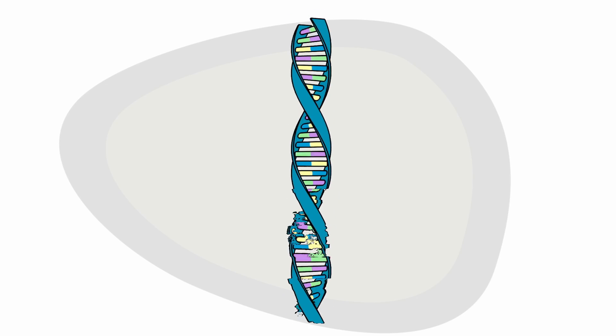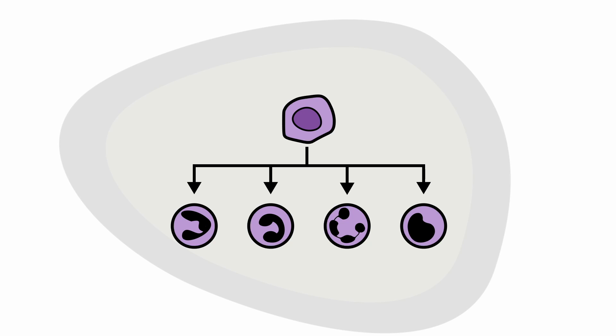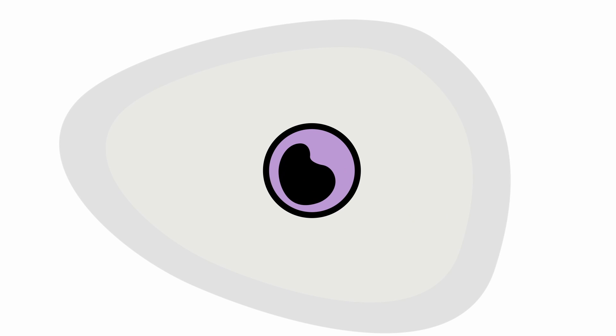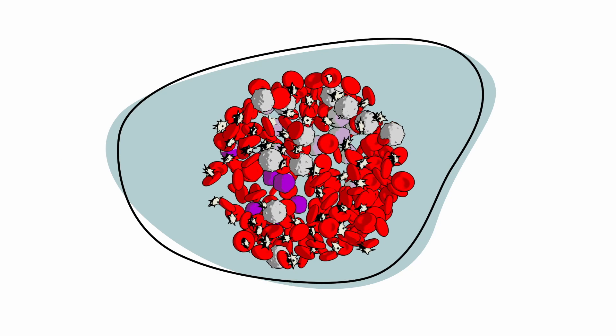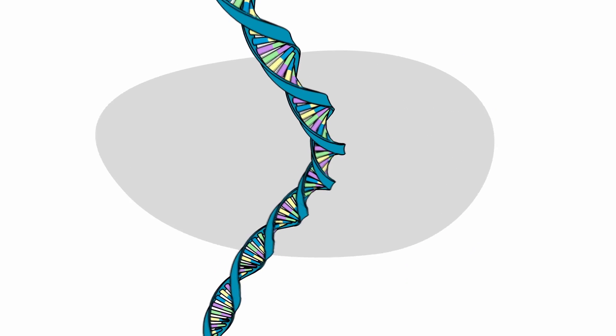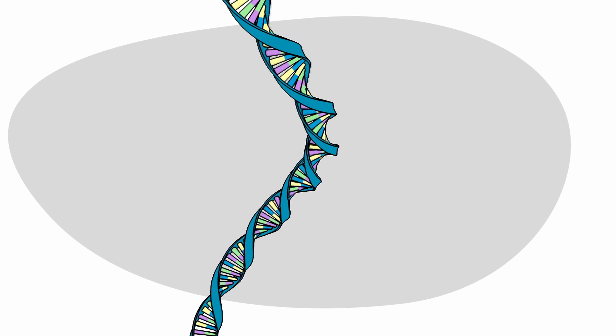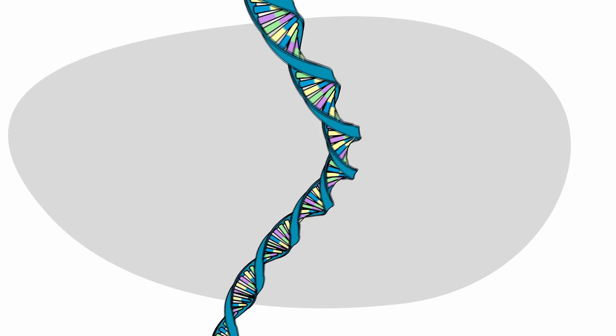In CLL, something goes wrong with the DNA of a type of white blood cell called lymphocytes, causing normal cells to become leukemia cells. DNA is the material that carries all the information about how our bodies look and work.